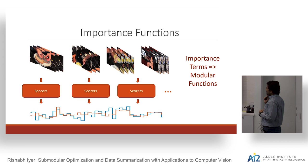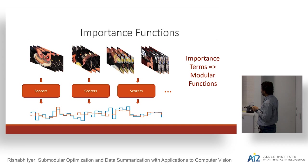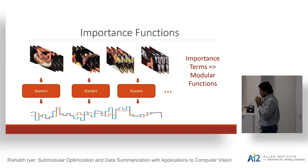Finally, importance functions assign a score for each image. These can be derived through some kind of model or from extracted features. The whole idea is that we want to be able to combine all of these different models together in our learning framework.